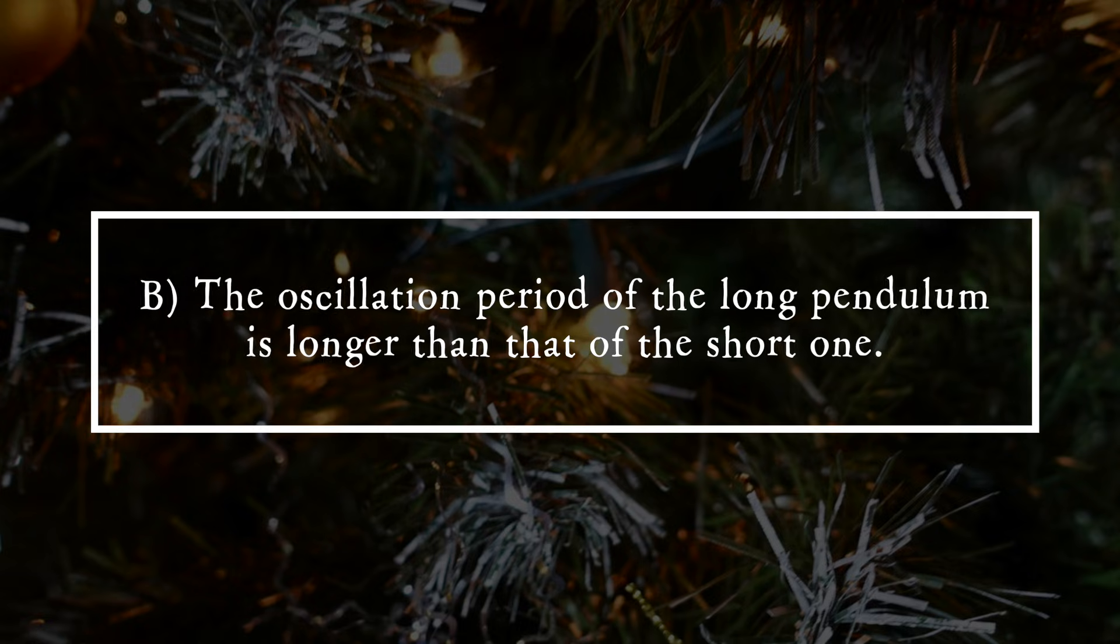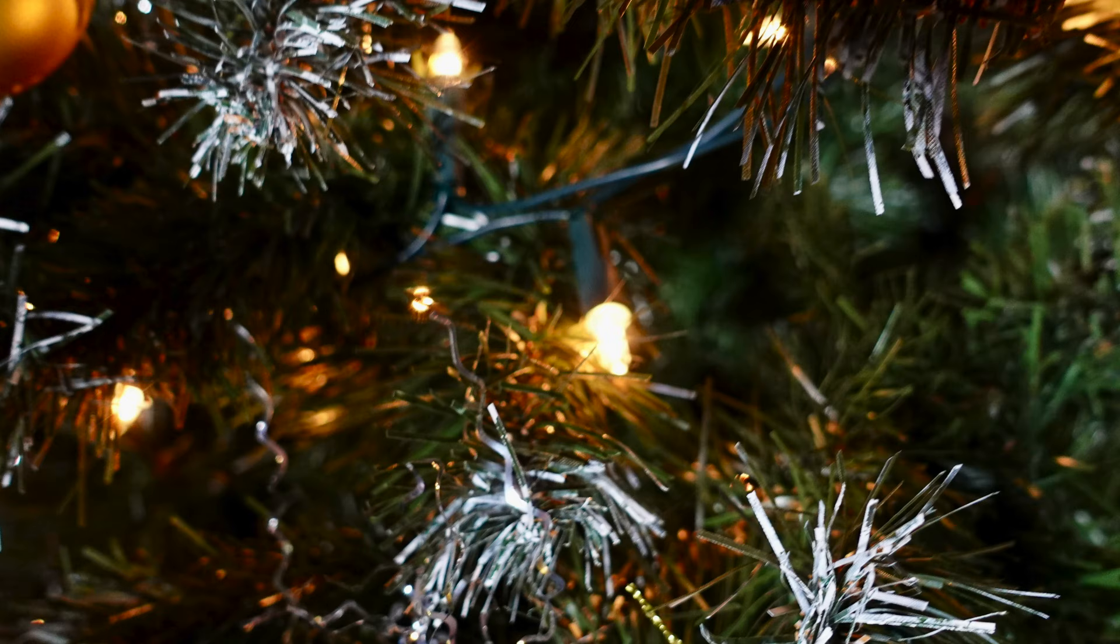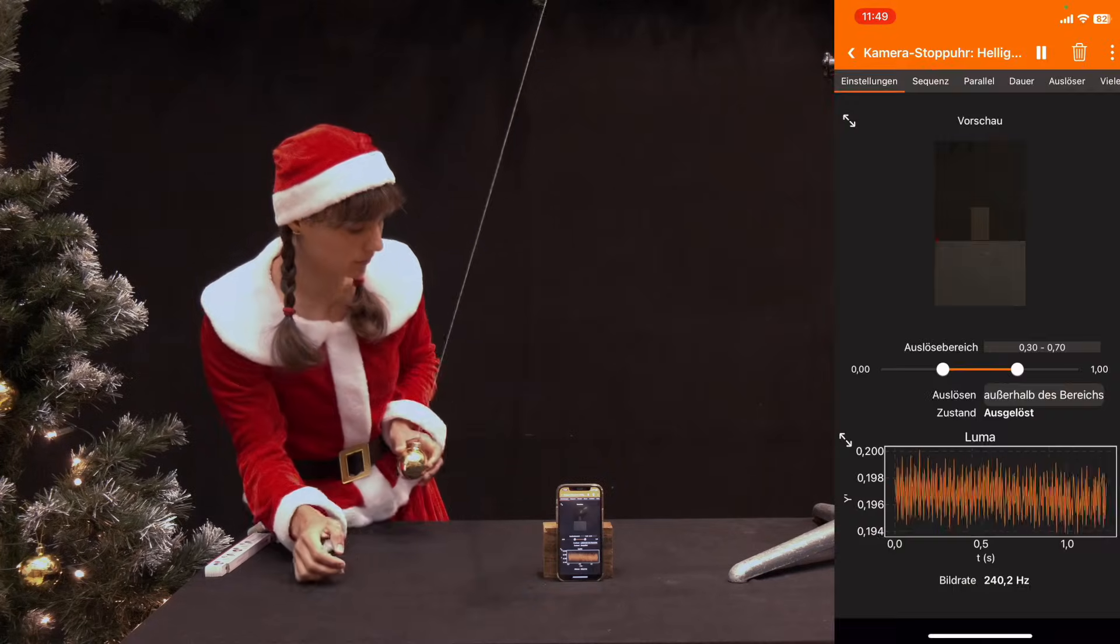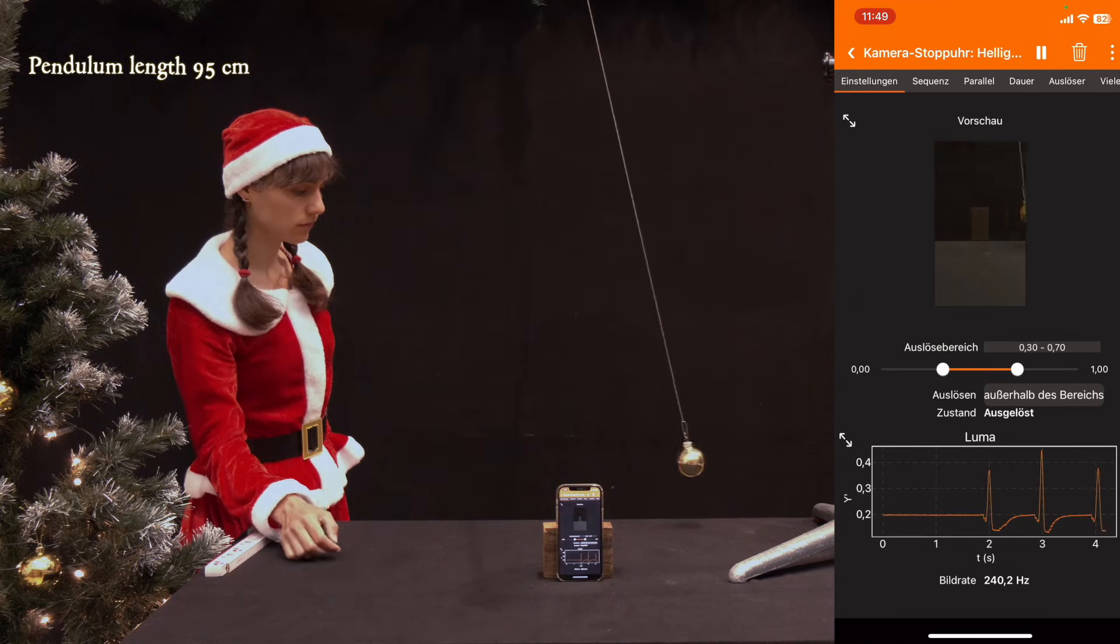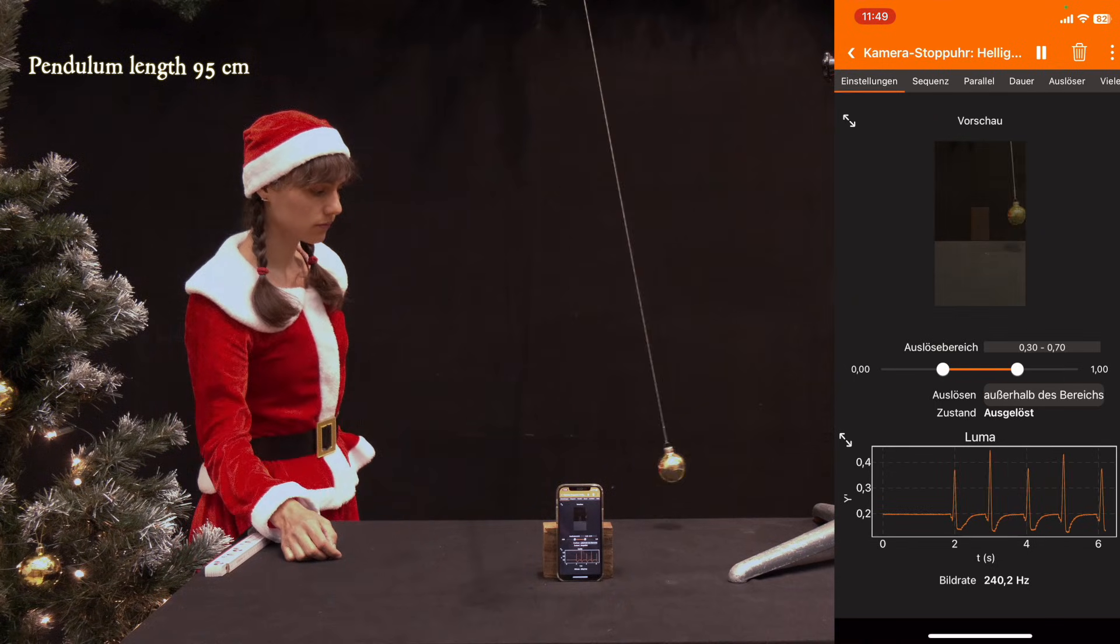The answer is B: the oscillation period of the long pendulum is longer than that of the short one. The app recognizes when the brightness in the preview image changes from dark to light or from light to dark.